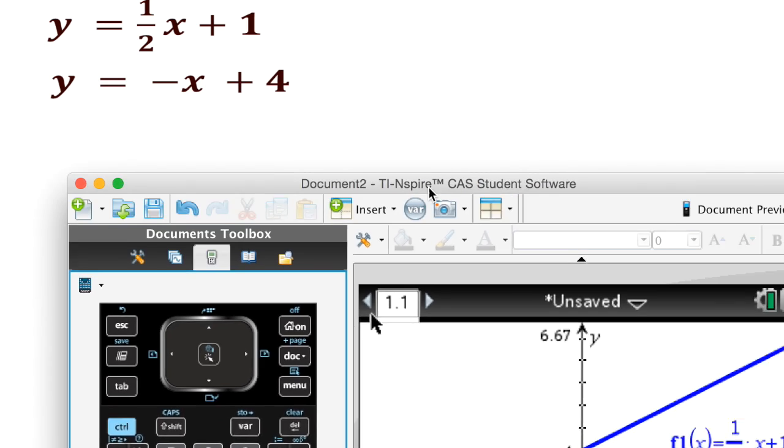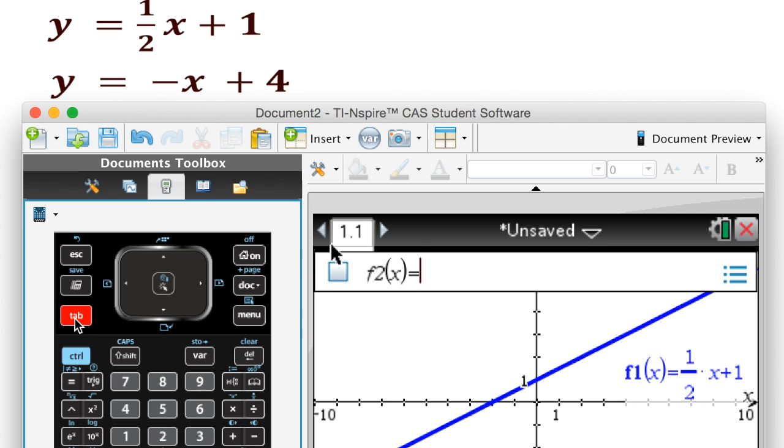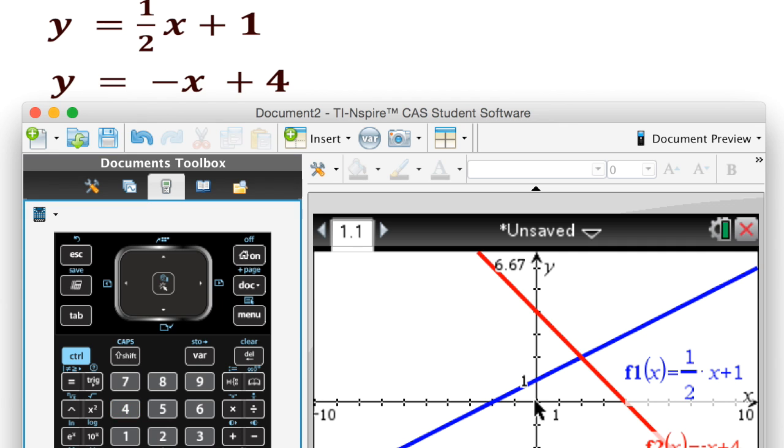The second one is going to be negative x plus 4. So in order to do that one, I hit tab again, and then I'll just go negative, and my x plus 4. I hit enter.